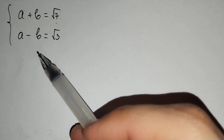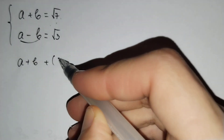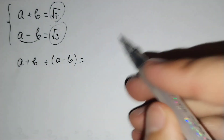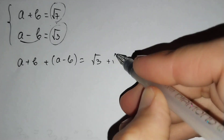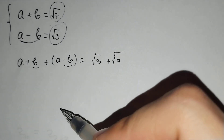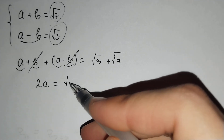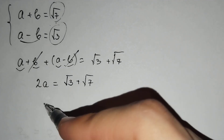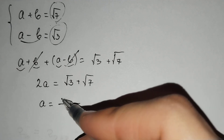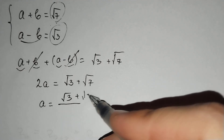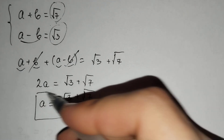Firstly, if we add these two equations side by side, b and negative b are opposite numbers. That's why a plus b plus a minus b equals square root of 3 plus square root of 7. B and minus b cancel, and a plus a equals 2a. So 2a equals square root of 3 plus square root of 7, and therefore a equals square root of 3 plus square root of 7 over 2. This is our a.